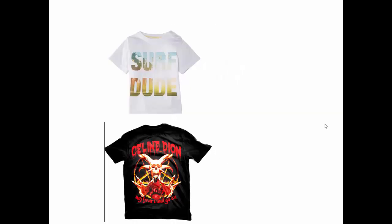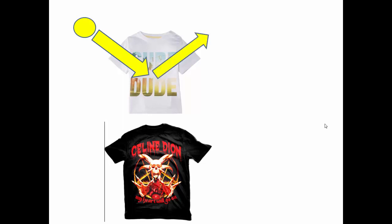When wearing a light surf dude t-shirt compared to a heavy metal black t-shirt, which one is going to be reflecting the most radiation? The sun shines on the light-colored surf dude t-shirt and most of the radiation is reflected, giving a high albedo of around 0.8 or 0.9. For the heavy metal black t-shirt, the same radiation is incident but much less is reflected because it is absorbed — that's why it appears so dark.